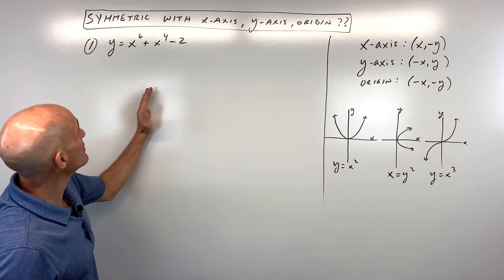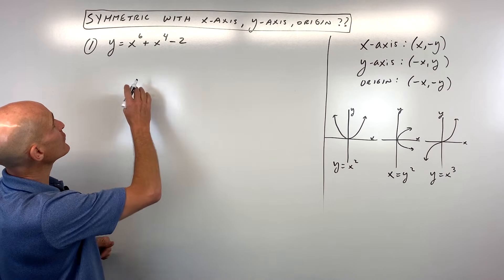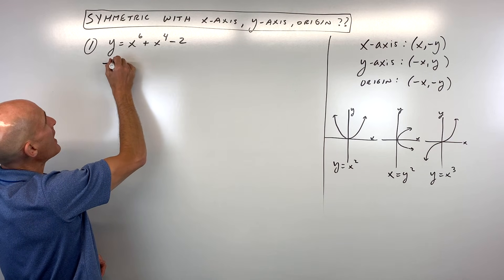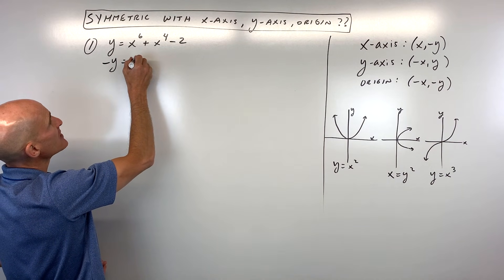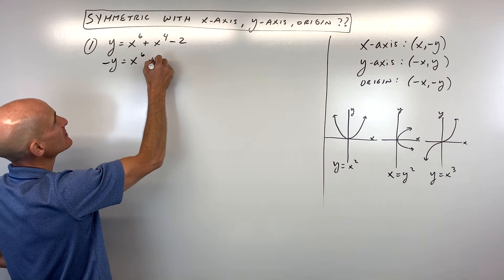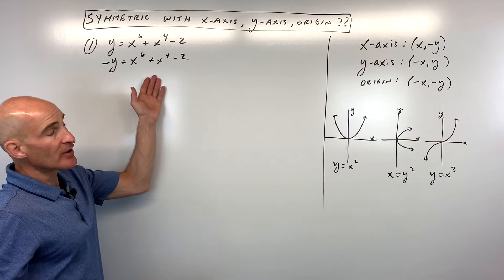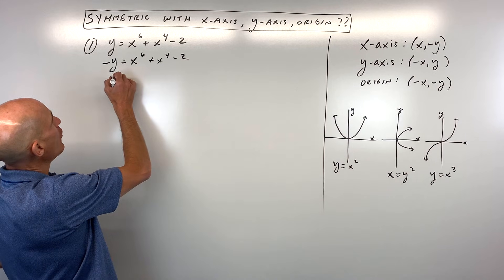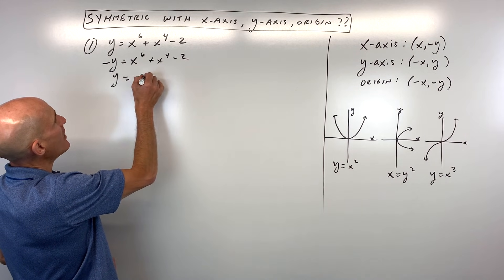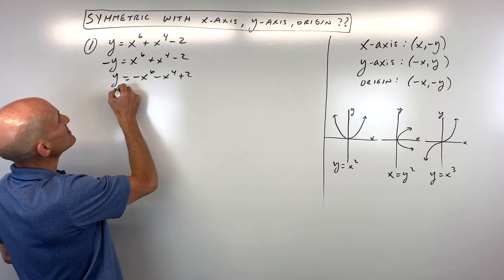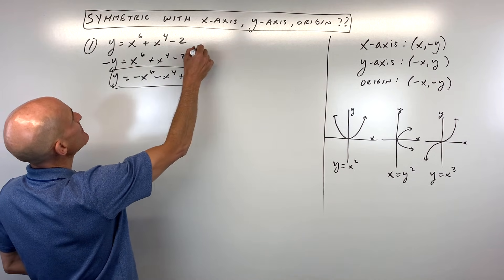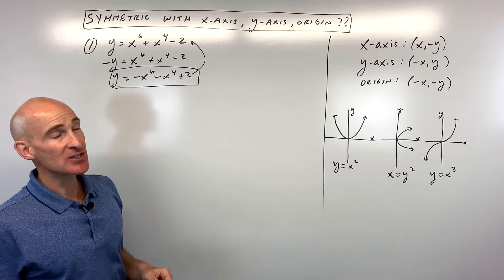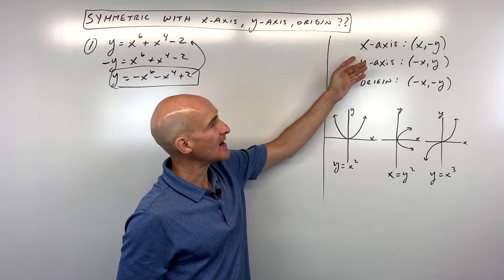Diving into the three examples — for number one, let's start with x-axis symmetry. If we replace y with negative y and x with just x, does that look like the original equation? You can rearrange it by multiplying through by negative one to get y by itself. When you look at this, the signs are actually the opposite, so we know it's not symmetric with the x-axis.